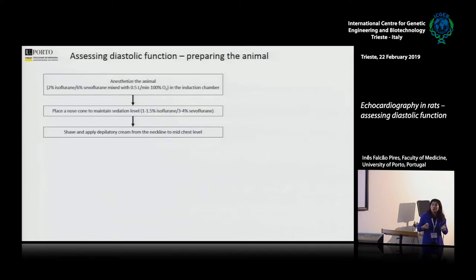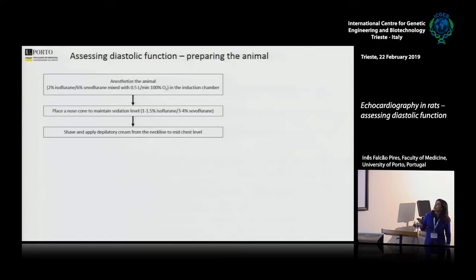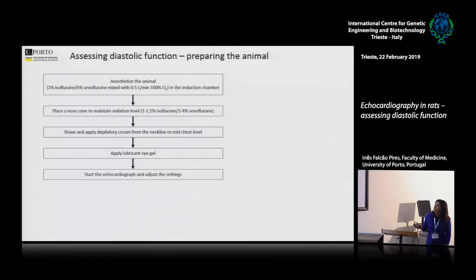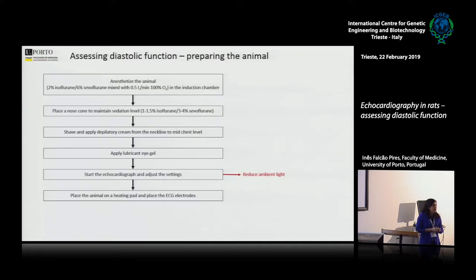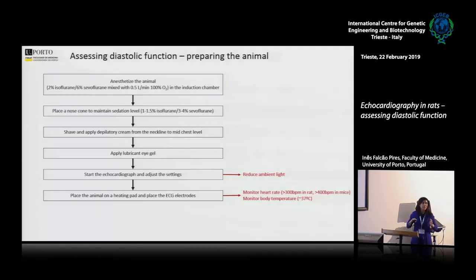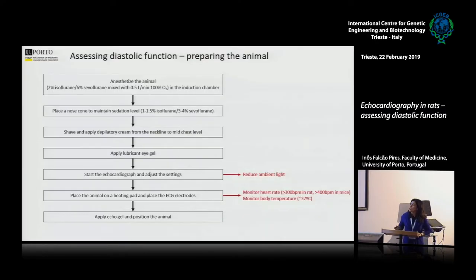You have to pay attention because females have nipples, so if you go with the machine there will be a problem. The cream is also a little bit sensitive to mouse and rat skin, so put it on and take it off as soon as it is done. Apply lubricant gel to avoid any eye damage. Then start the echocardiograph, adjust all the settings, and reduce the ambient light — a dark room always helps. Place the animal on a heating pad and place the ECG electrodes. For diastolic function assessment, ECG is particularly useful. Monitor heart rate and body temperature, as a slight difference in body temperature might have an impact on cardiac function. Then apply the echo gel and position the animal.